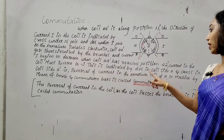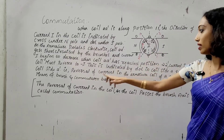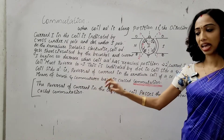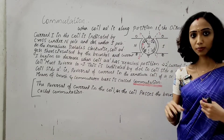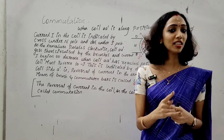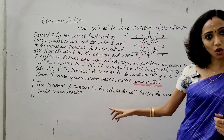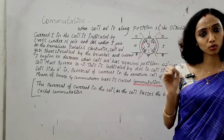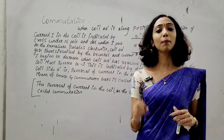This is indicated by dot in coil side A and cross in coil side A'. Reversal of current in the armature coil of a DC machine by means of brush and commutator is called commutation. The brush and commutator cause the reversal of current, which is commutation.